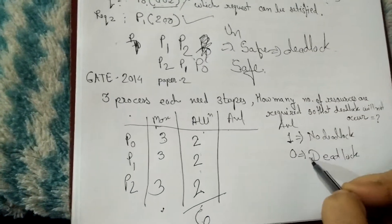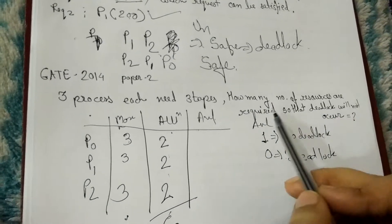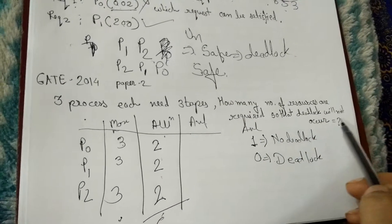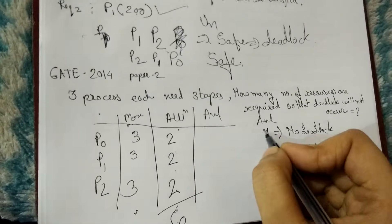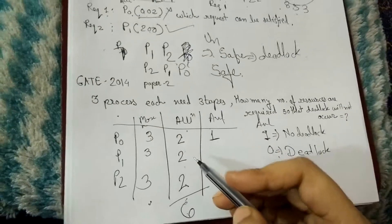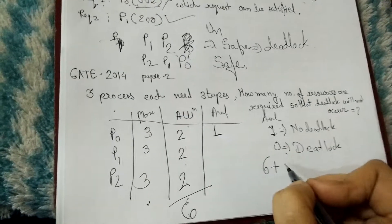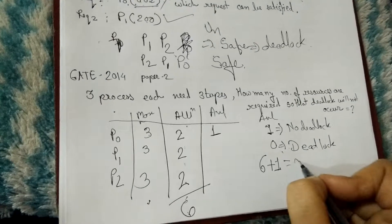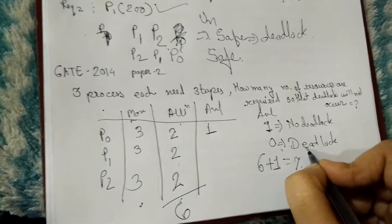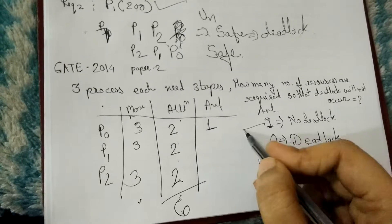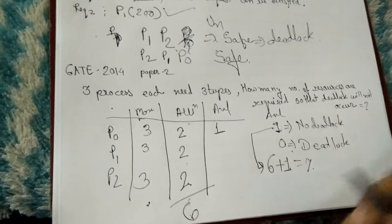For no deadlock, available must be at least 1. Total resources required = total allocation (6) + available (1) = 7 resources. So 7 total resources are required to guarantee no deadlock.